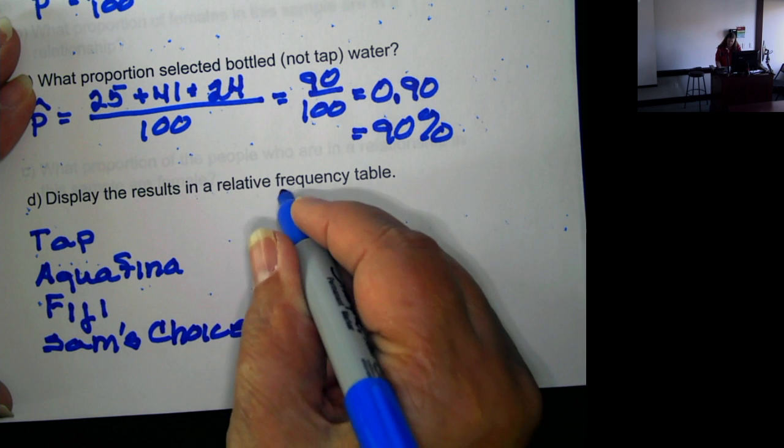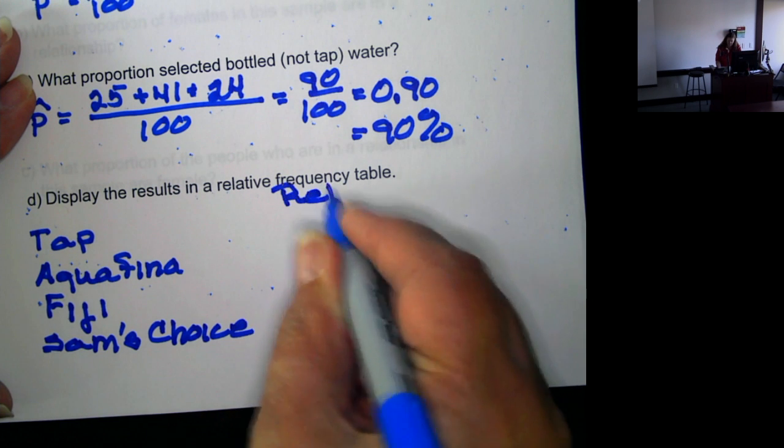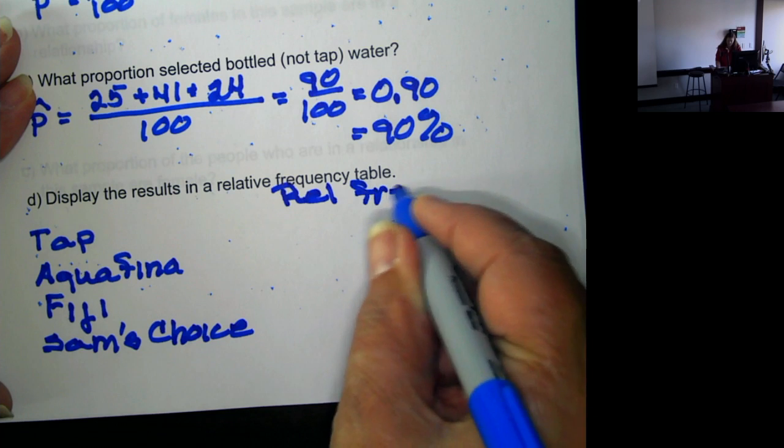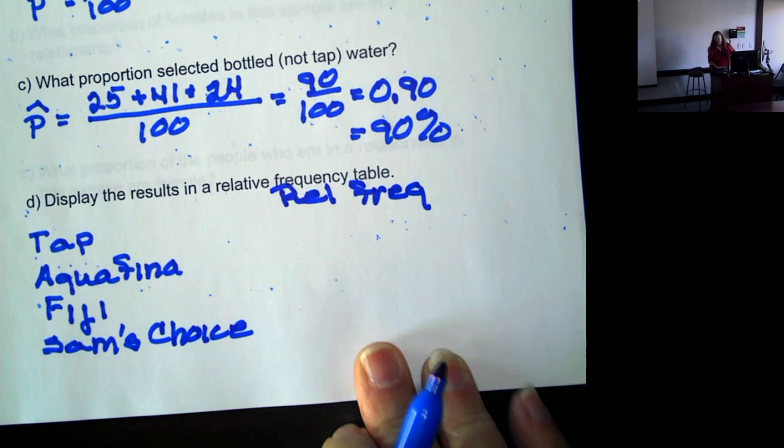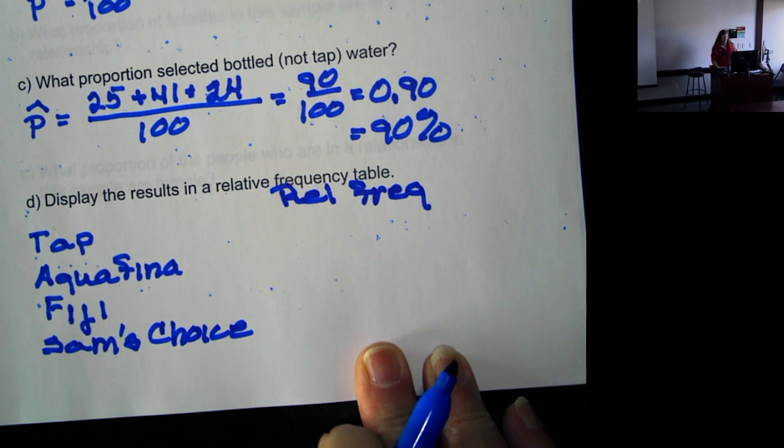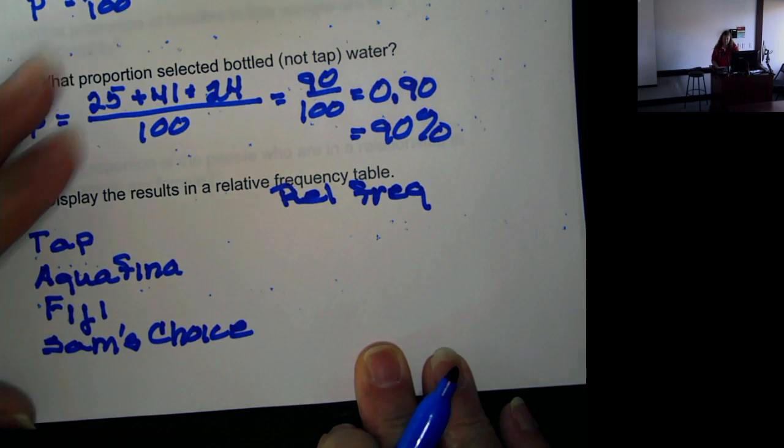Now we're working with the relative frequency. It's nice because this turns out to be 100 that we worked with. So to come up with the relative frequency, it's fairly easy.